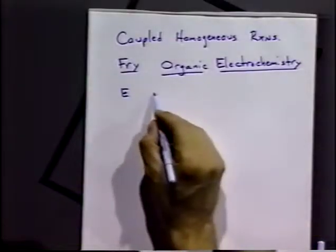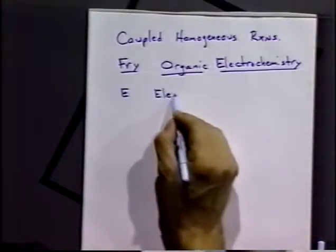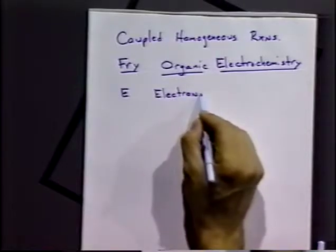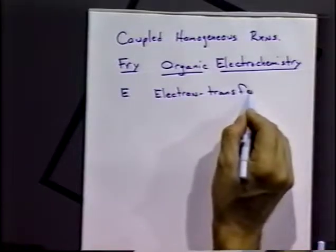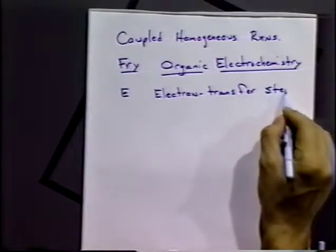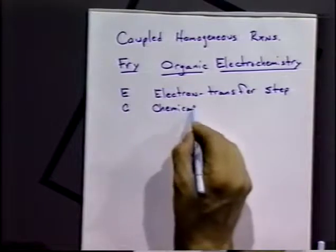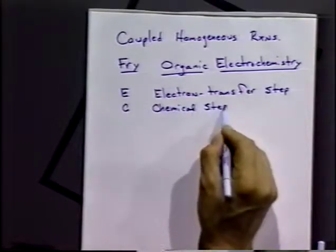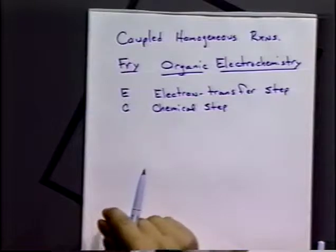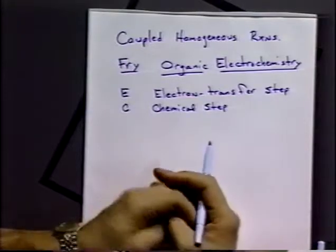What we're going to do is talk about two types of things. One is we'll have a notation E, and that's going to be the electron transfer step. And we have C, which is our chemical step. That chemical step can be any kind of chemical step — it can be bond breaking, bond making, an equilibrium step, and so on. We'll use subscripts on those E's and C's to indicate other things that are going on.